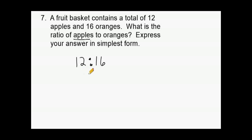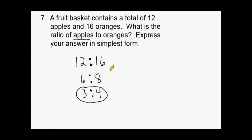If we divide both by 2, we get 6 to 8 — but that is still not in simplest form because both numbers share a common factor of 2. Dividing by 2 again gives us 3 to 4. Alternatively, if you recognize that 4 is the greatest common factor right away, dividing 12 by 4 gives 3 and 16 by 4 gives 4 — so the simplified ratio of apples to oranges is 3 to 4.